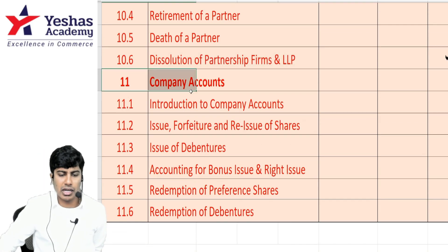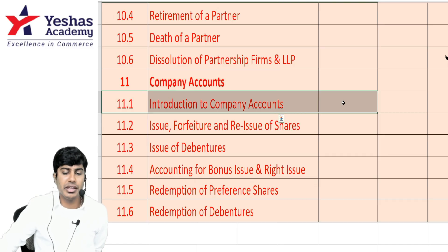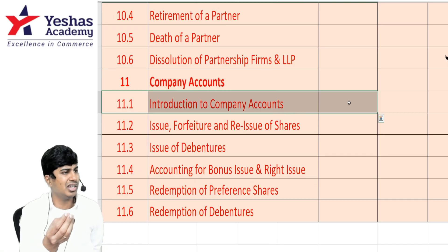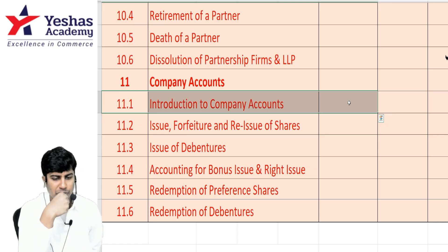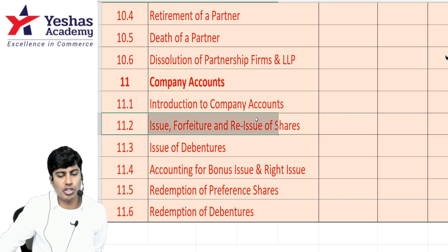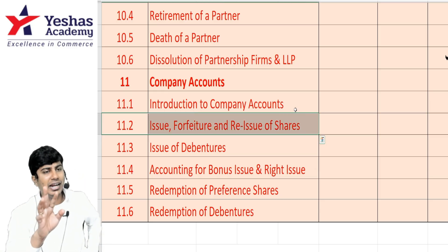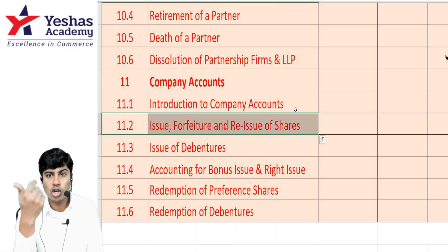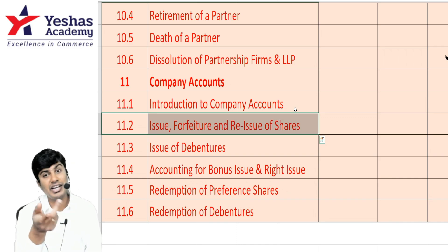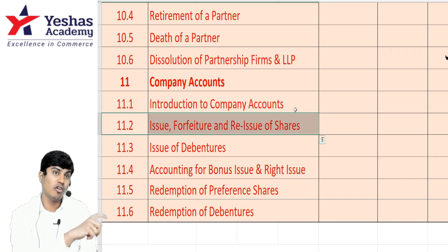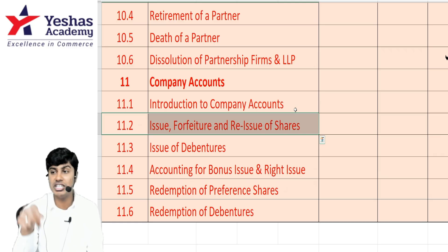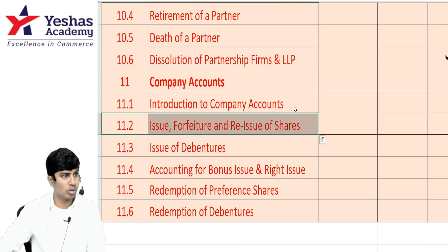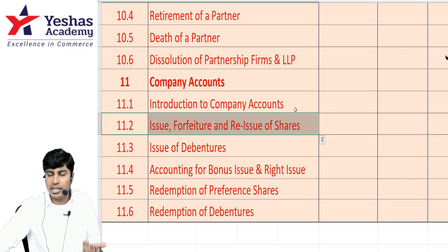For company accounts, in the introduction be ready to cover basic theory points and characteristic features of a company, as short notes may come from there. For issue, forfeiture, and reissue of shares, practice pro-rata-based portions, calls in advance, calls in arrears, and reissue. Also know capital reserve computation — how much is profit and how much is premium. We discussed this at length in the marathon; please watch that portion once again.